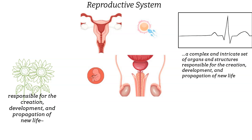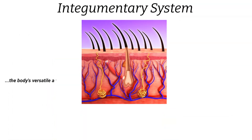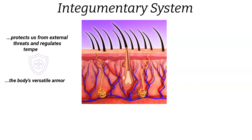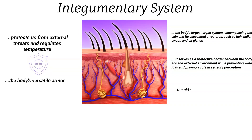Lastly, let's explore the integumentary system — the body's versatile armor. Like a shield guarding a warrior, our skin protects us from external threats and regulates temperature. The integumentary system is the body's largest organ system, encompassing the skin and its associated structures such as hair, nails, and sweat and oil glands. It serves as a protective barrier preventing water loss, playing a role in sensory perception, and contributing to communication and appearance.